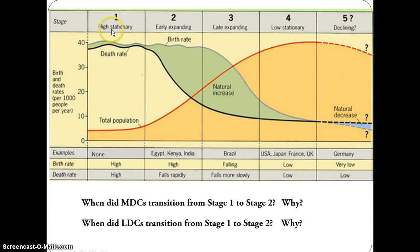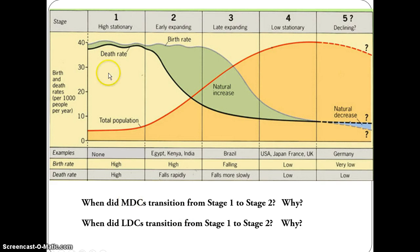Let's talk about when each country moves from one stage to another. Everyone begins in Stage 1, which is really from the beginning of time up until, for more developed countries, the 1750s through 1800s — around the Industrial Revolution, which began in Great Britain and spread to the United States and then Western Europe. This caused changes in the death rate. The death rate was exceptionally high in Stage 1 because of famine, lack of food, and disease — much of which has to do with sanitation and access to clean water.